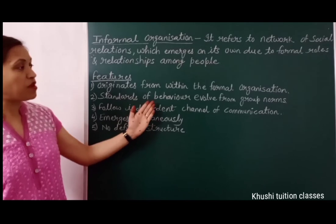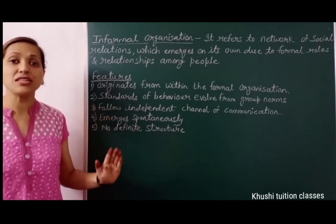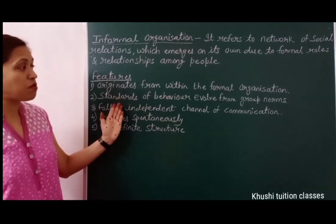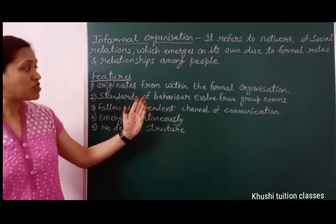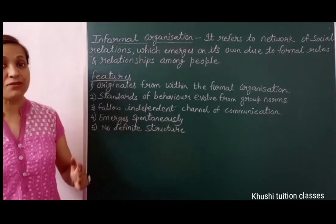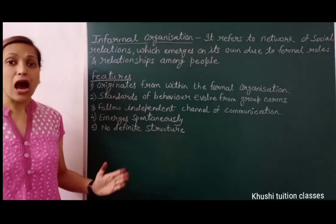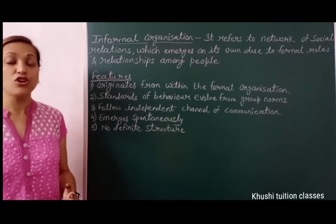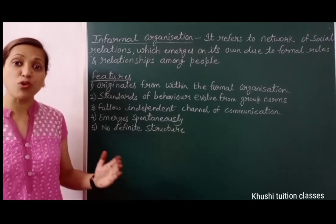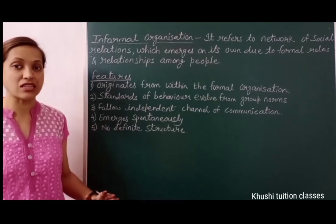The second feature is that standards of behavior are governed by group norms. In informal groups, there are no restrictions — behavior is based on group norms. For example, a group can be optimistic or pessimistic, or a very active group. Just like in a class you see many friend groups — studious students have one group, mysterious students have another, and those interested in sports have their own group. The whole group behaves the same way.